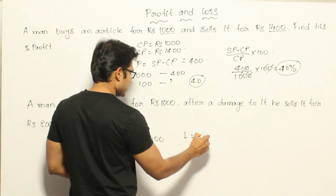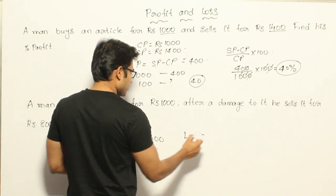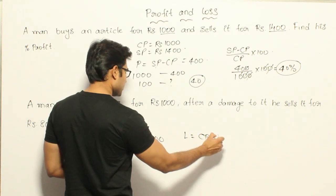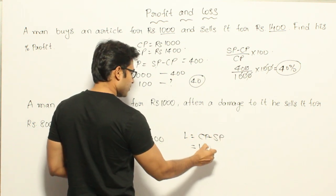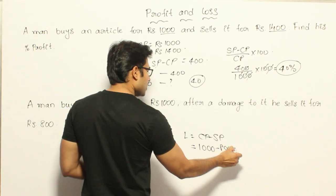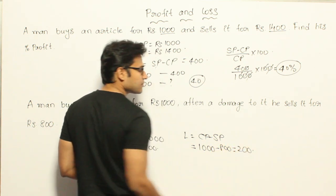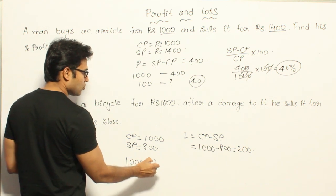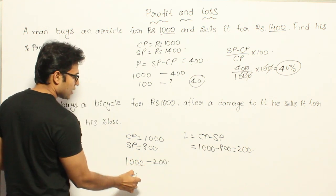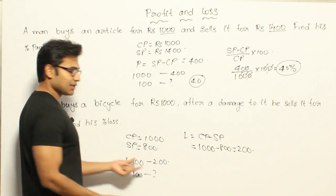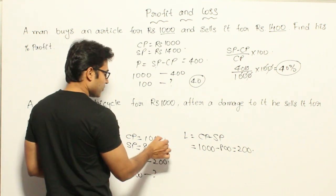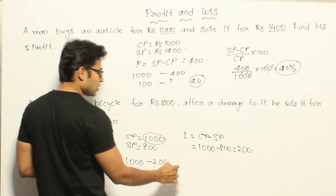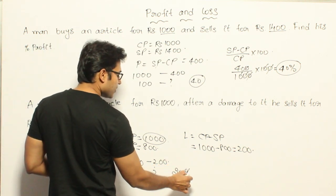The loss equals cost price minus selling price, which is 1000 minus 800. Therefore 200 is the loss. For 1000 rupees of his investment, 200 is the loss. Then for 100 rupees, what is the loss? That is the loss percent. For 100 rupees the loss is 20. Therefore 20 percent is the loss.